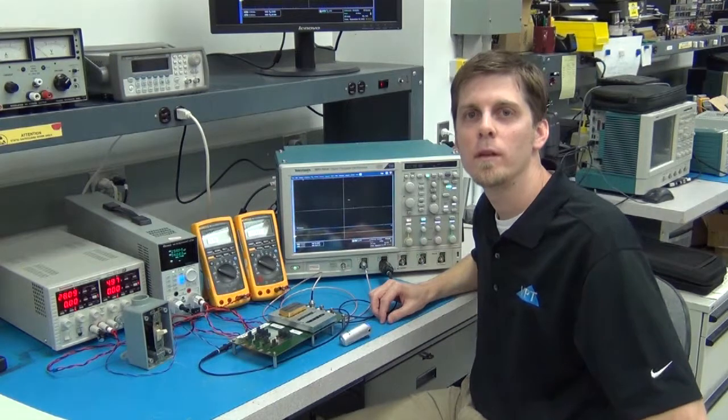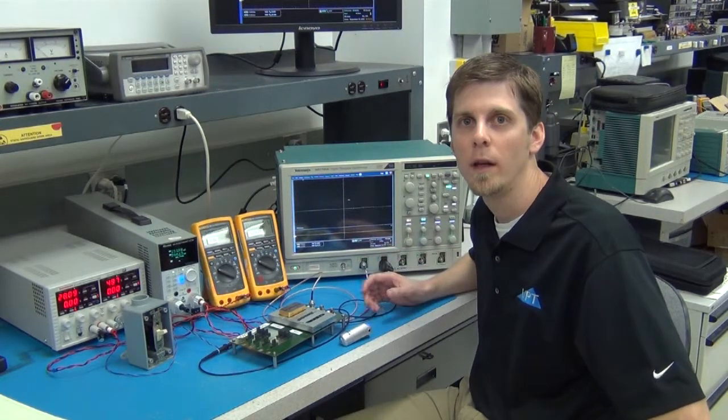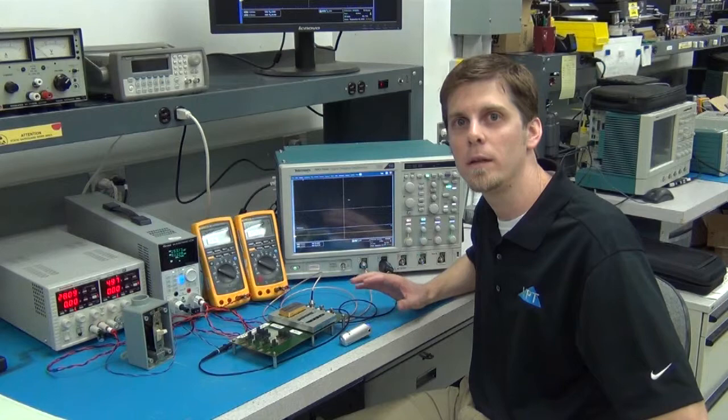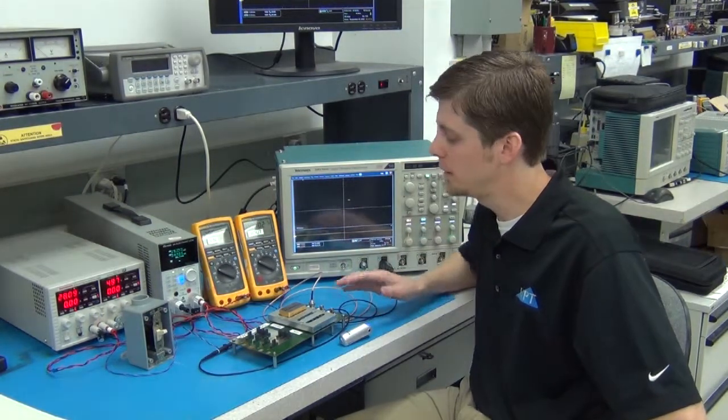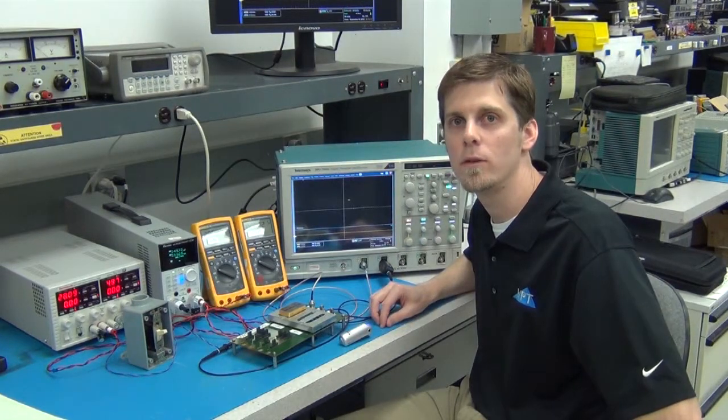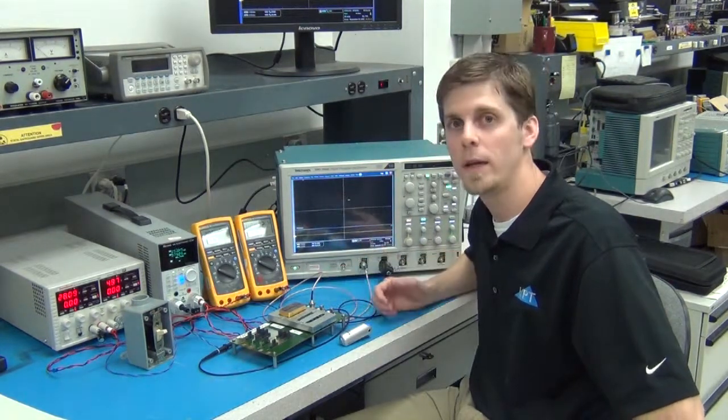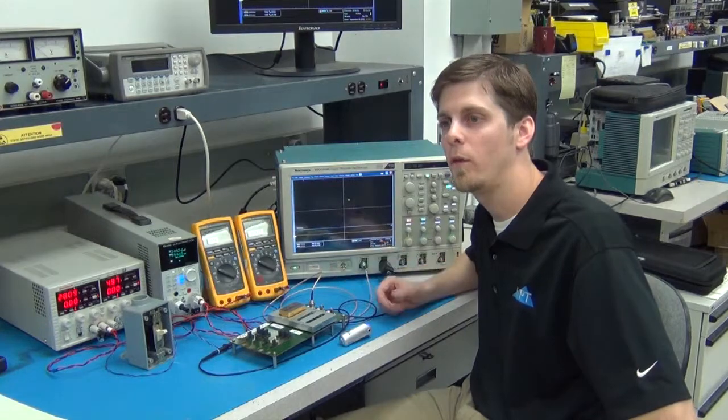So now I'm going to demo the inhibit function and look at the inhibit delay, turn on delay when we release the inhibit pin. For this demo, I'm using a DVTR2805S. It's 28 volt input, 5 volt output, a 30 watt converter.